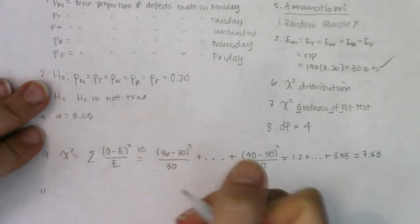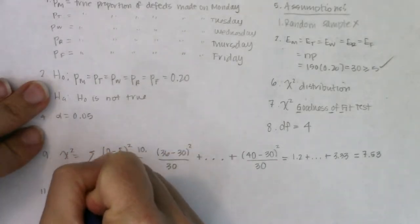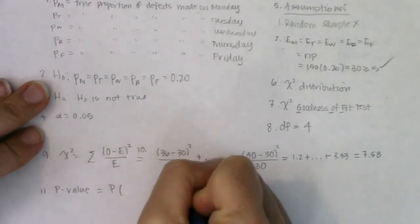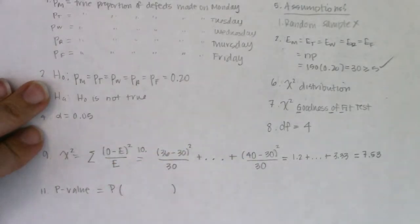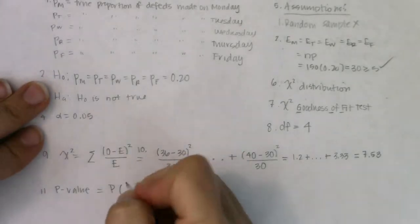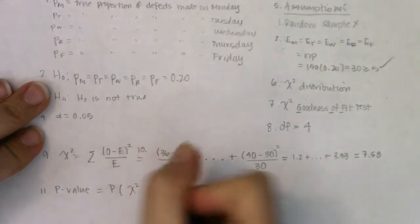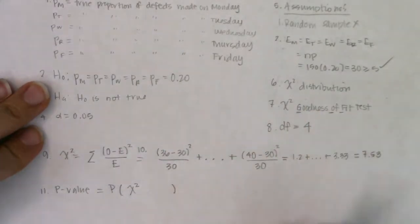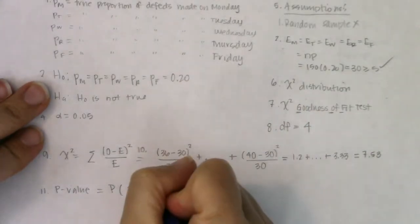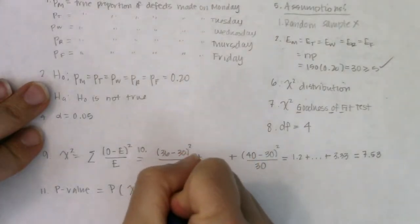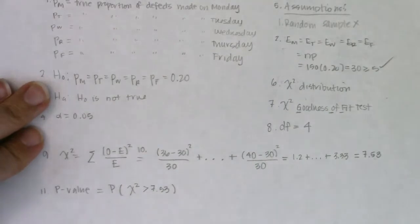Step 11 is the p-value — it will always be a probability. You owe me a letter (chi-squared from step six), then a symbol (greater than), then a number (7.53 from step 10). Whenever running a chi-squared test, you only do the right tail. Run chi-squared CDF: lower bound is 7.53, upper bound is 1E99 (positive infinity), with four degrees of freedom.